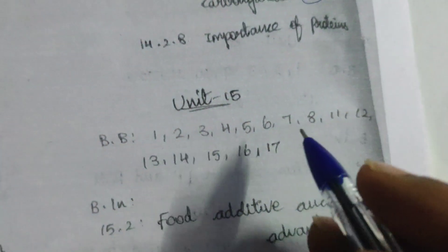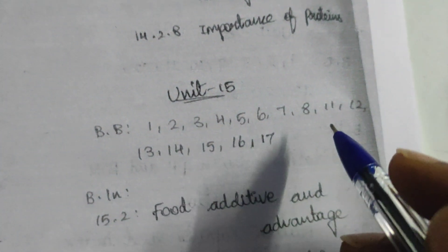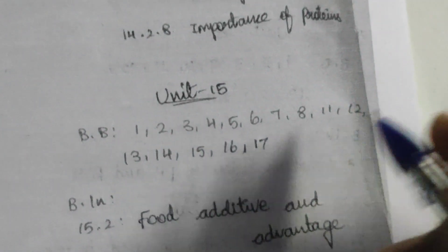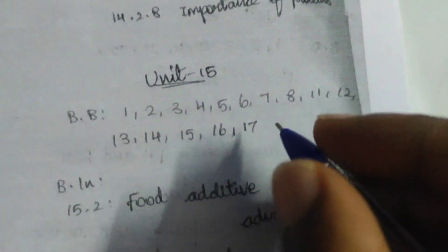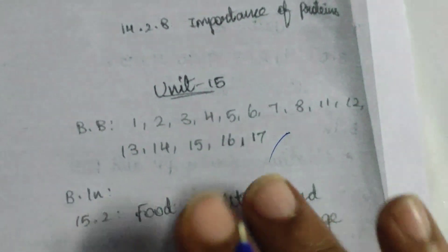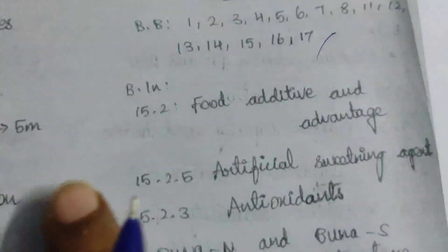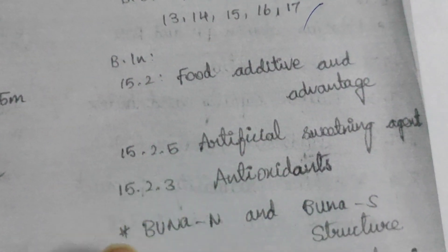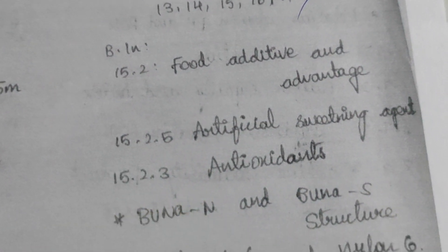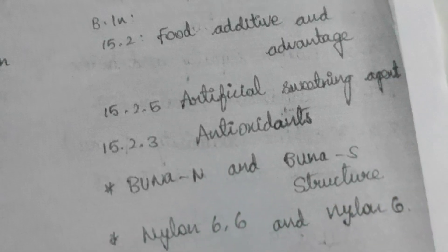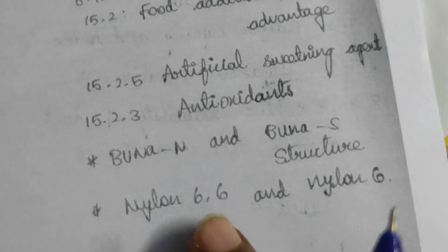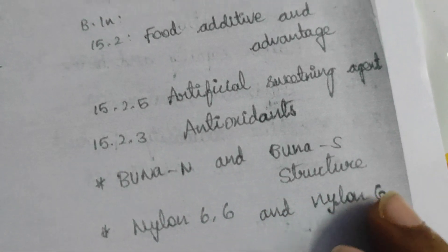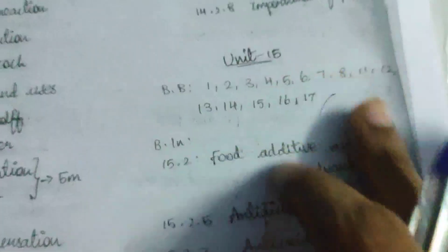The last lesson is Unit 15. Book back: 1, 2, 3, 4, 5, 6, 7, 8, 9, 11, 12, 13, 14, 15, 16, 17. The next booking is 15.2, 15.2.5, 15.2.3. Beno N, N, 6,6. This is very important.